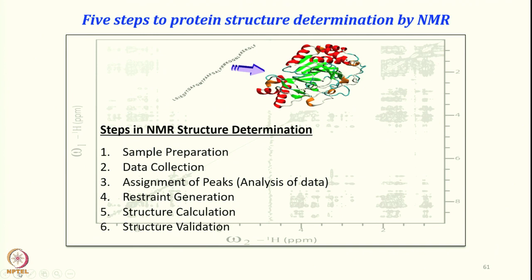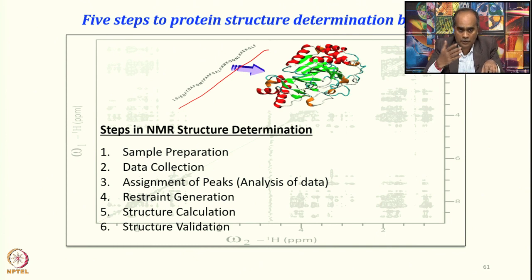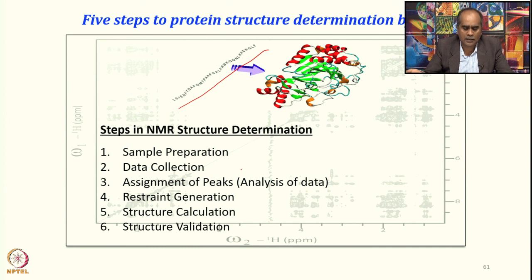Let us start from the beginning. As we said, if we are looking at the protein, we need some structural and functional information. Just to recap the steps involved in protein structure determination by NMR: we are going from primary sequence to three-dimensional structure. First, you have to prepare the sample. Our sample has to be isotopically labeled — you feed your bacteria with ammonium chloride and 13C-labeled glucose. For doubly labeled protein, glucose also has to be 13C-labeled.